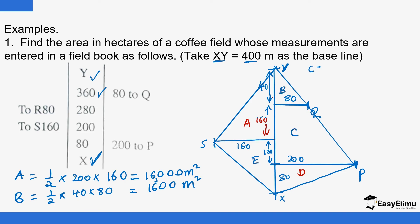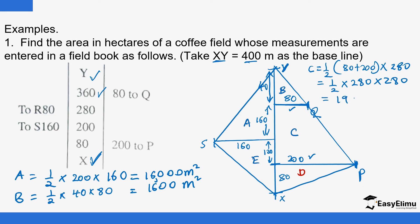Area C is trapezoidal in shape. So it's half times the two parallel sides — 80 plus 200 — multiplied by the height, which is the distance between the two parallel sides: 120 plus 160, giving 280. So that is half times 280 times 280, which equals 140 times 140, giving 19,600 square meters.